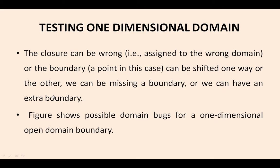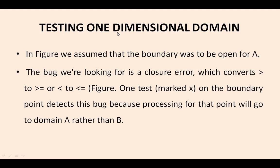We are testing on one-dimensional domain. Whenever we are having a closure, it may be wrong, or the boundary can be shifted one way or the other, or we can miss the boundary, or we can have an extra boundary. Then we have to test the domain. The possible domain bugs for one-dimensional domain — one-dimensional open domain boundary — we are going to see.